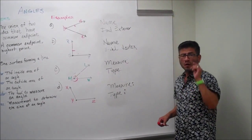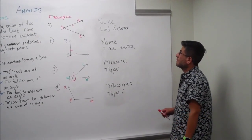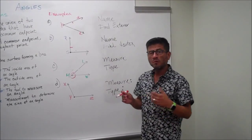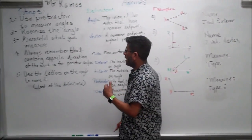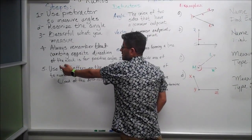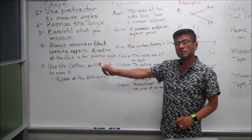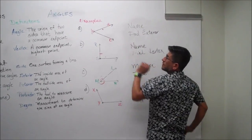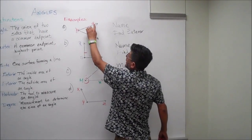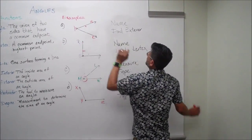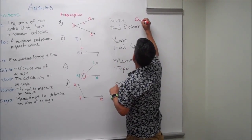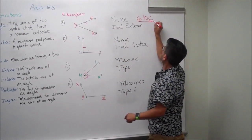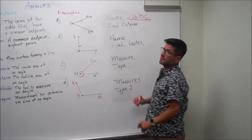Now let's go one by one — hopefully you got the same answers as me. Name the angle. What will be the name of the angle? Remember what we did? We go to step number five — use the letters on the angle to name it. We have A, B, and C. So you read it A, B, C, left to right. And that's the name of the angle.